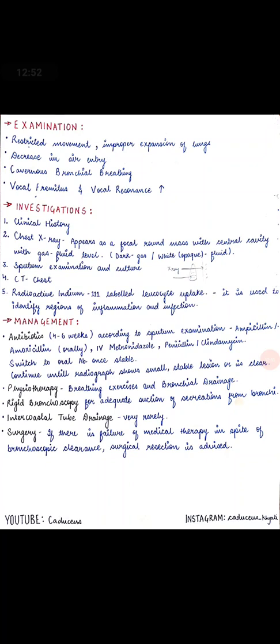Second is physiotherapy — we can do breathing exercises and bronchial drainage, using techniques to drain and cough out sputum. Third is rigid bronchoscopy, where we do visual examination of the bronchi and suction out secretions and sputum from outside for adequate drainage.